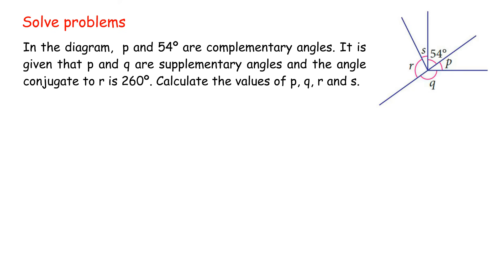Solve problems. In the diagram, p and 54 degrees are complementary angles. It is given that p and q are supplementary angles, and the angle conjugate to r is 260 degrees. Calculate the values of p, q, r, and s.